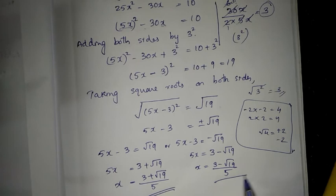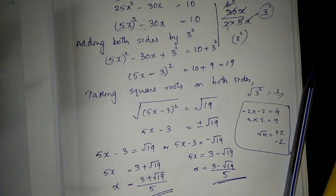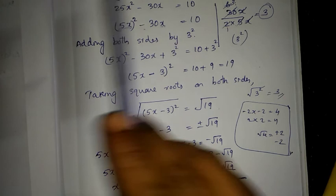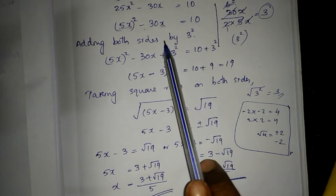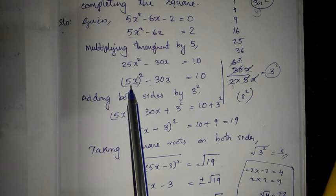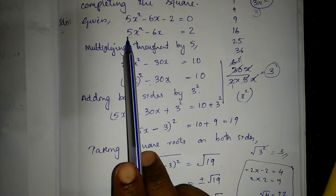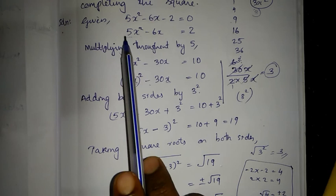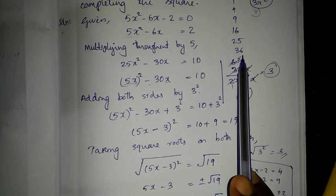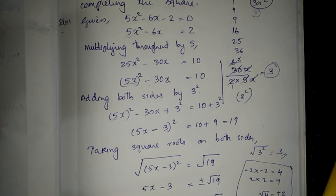So here we have studied two different methods. From these two methods, one thing is very clear: whatever method you use, you get the same answer. The only difference is in how you choose the number to add to both sides, and whether you divide (Method 1, to make the coefficient of x² equal to 1) or multiply (Method 2, to make it a perfect square). Both methods are easy — use whichever is suitable for you.